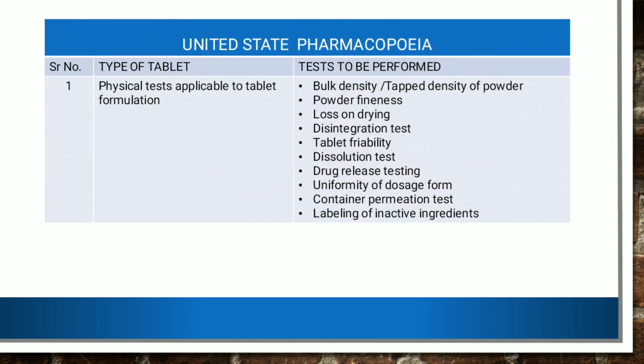Now let's talk about the official tests specified in the United States Pharmacopoeia. According to USP, physical tests applicable for tablet formulations include: bulk density or tap density of powder, powder fineness, loss on drying, disintegration test, tablet friability, dissolution test, drug release testing, uniformity of dosage form, container permeation test, and labelling of inactive ingredients.